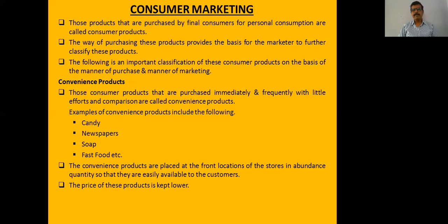There are many types of consumer products. The first one is called a convenience product. Examples include soap, candy, and fast foods. The least amount of effort is spent in making a purchasing decision for these products.